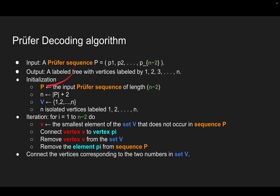The algorithm initializes as the following. We initialize the set P as the input Prüfer sequence. We initialize the set V as a set containing all the elements from 1 to n, and we initialize the tree as n isolated vertices labeled from 1 to n.